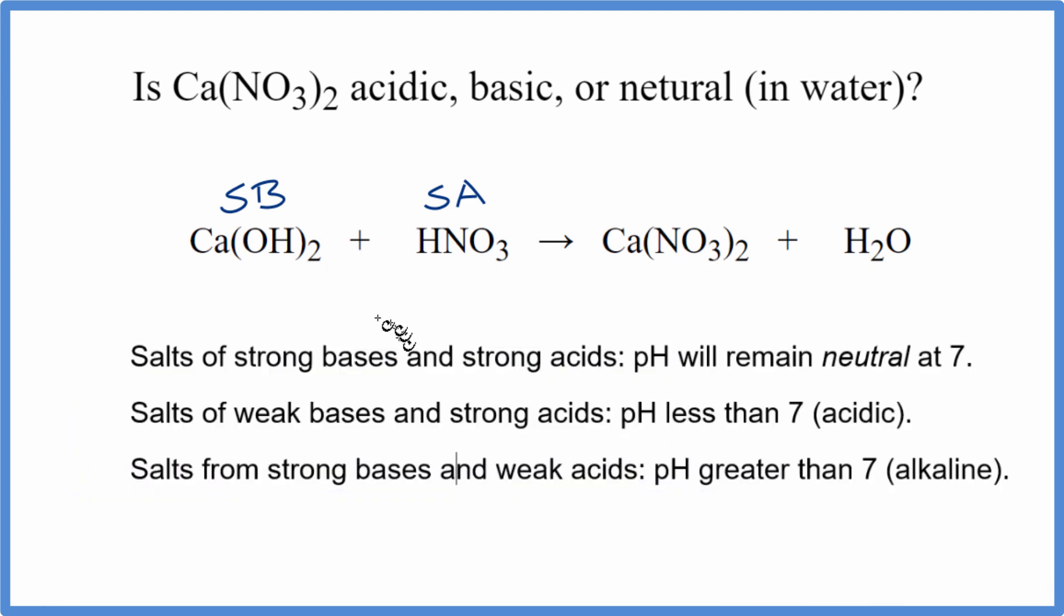Now we can use our rules. So we have a strong base plus a strong acid, and when these two react, they neutralize. We get our calcium nitrate and water, and that should have a pH that is neutral, so right about 7. So in answer to our question, calcium nitrate is neutral when it's dissolved in water.